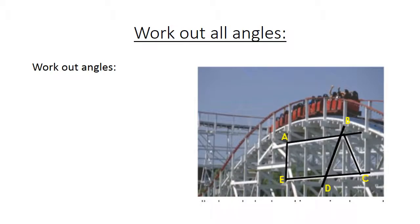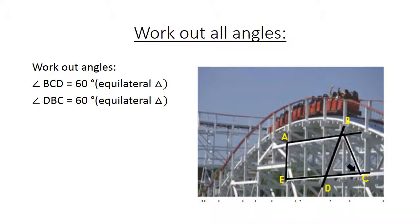Work out all angles. If we look at this picture, you can see angle BCD equals 60 degrees because it's an equilateral triangle, which means all the angles are going to be equal. Angle DBC also equals 60 degrees. Equilateral triangle.